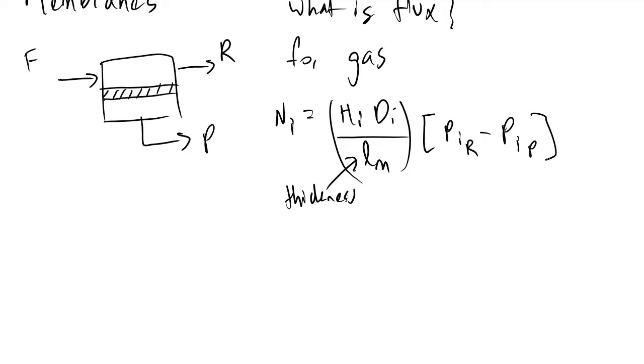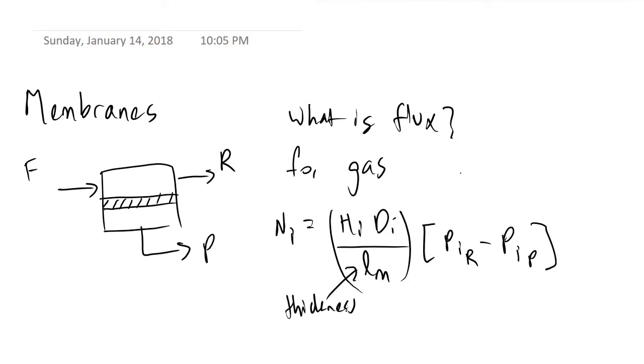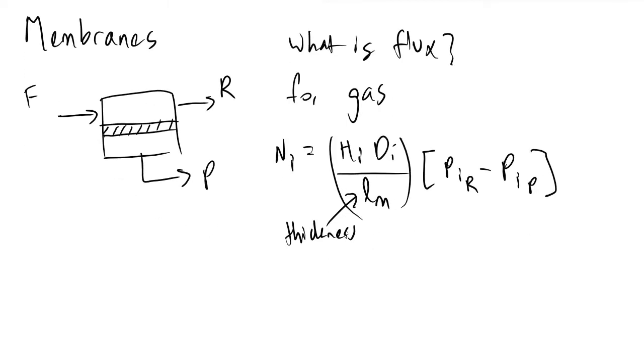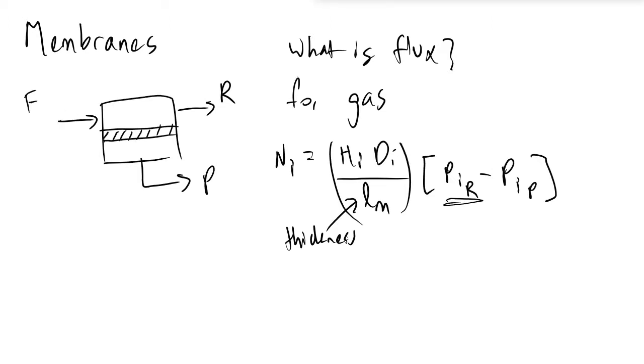If we are working with systems in which it is not well mixed on the feed or retentate side, this P sub iR term can take on some kind of function of the accumulated length of our membrane. What we can do is just take an average value of that if we know that quantity. This term here will be the partial pressure of component i on the retentate side. This is the molar flux equation that we will use for gases.